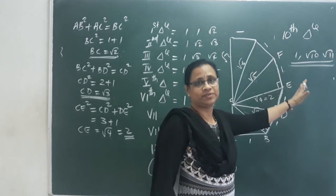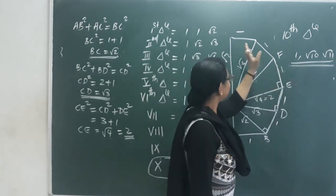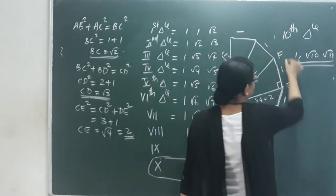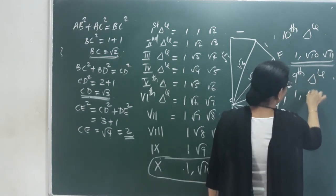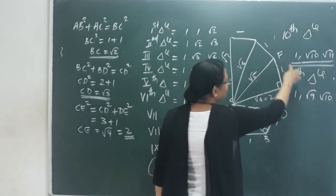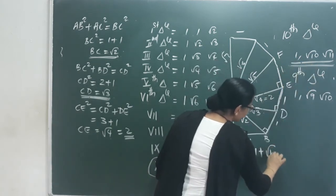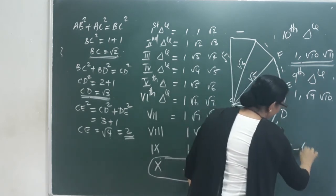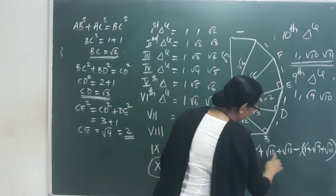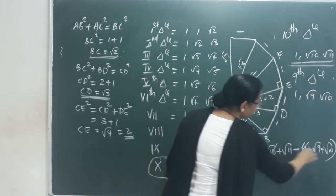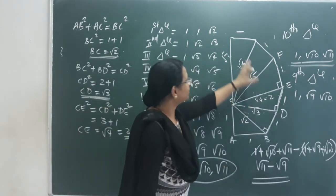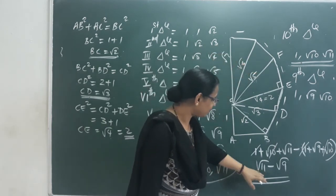For the second sub-question: the perimeter of the 10th triangle is 1 + √10 + √11, and the perimeter of the 9th triangle is 1 + √9 + √10. The difference is (1 + √10 + √11) − (1 + √9 + √10). The 1s cancel and the √10s cancel, leaving √11 − √9.